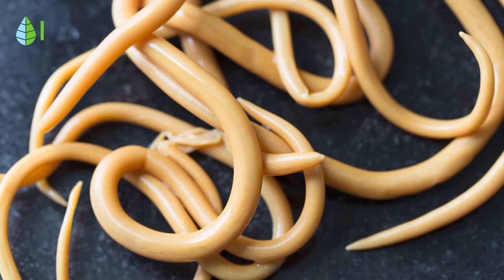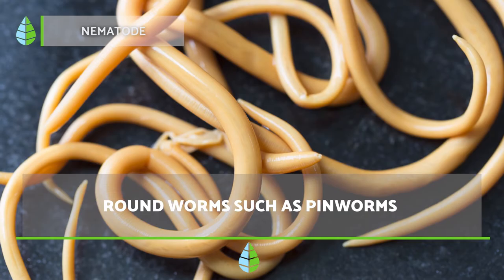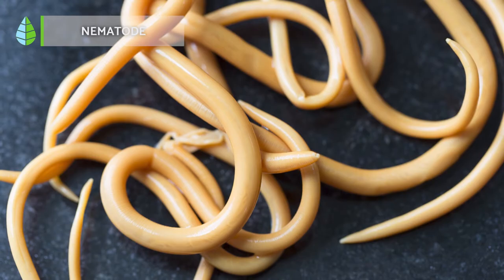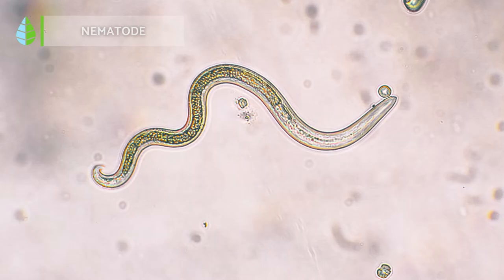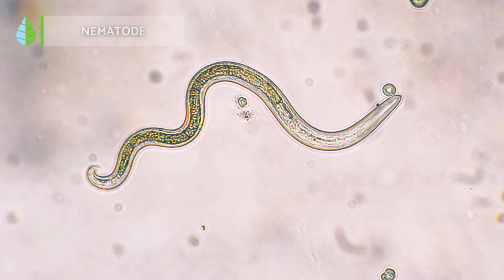Nematodes, or roundworms, are very common and diverse organisms found in soil and in water. Their bodies are not segmented and have characteristic muscles for locomotion. They can be free-living or parasitic. It is with the appearance of nematodes that invertebrates can develop a new cavity — the coelom — which permits hollow organs to exist within the body.